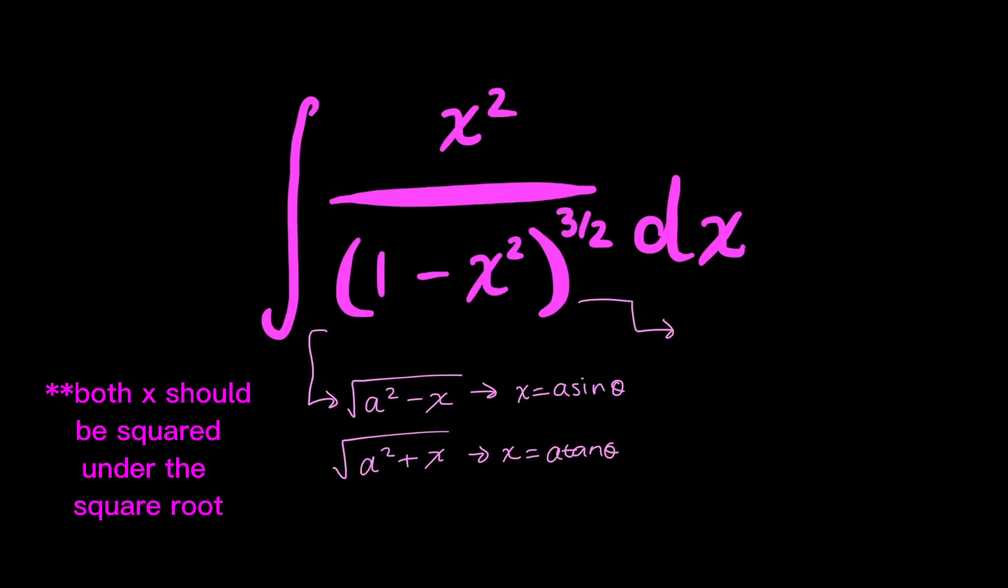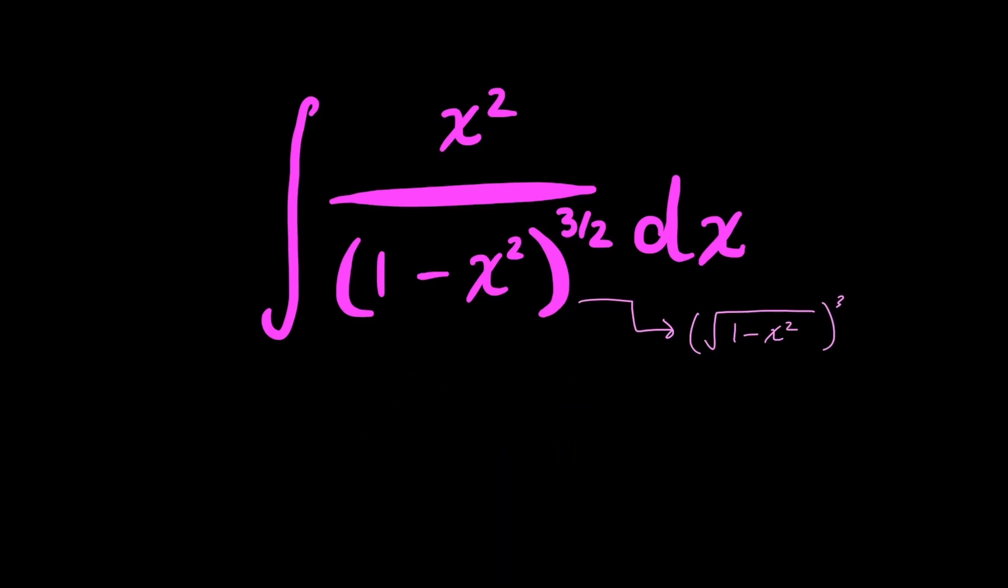If I could just rewrite this as 1 minus x squared under the square root raised to the power of 3, same thing, just raised to the power of 3. So I know for sure I could apply trig substitution, specifically sine substitution.